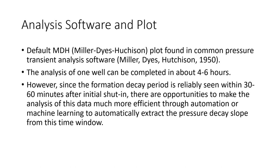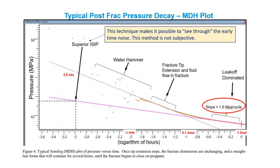This is another plot showing what you traditionally see in your MDH plot. You wouldn't want to calculate ISIP during data points where you have the water hammer immediately after shut-in. There is a fracture tip extension happening when there's a sharper decline of pressure decay. Once that smooths and it's leak-off dominated, that's when you start measuring the slope of your pressure decay. Another benefit of this post-fracture pressure decay analysis is that you can extend the line all the way to time zero. Since it's a log plot, this was extended to negative three hours, or 3.6 seconds after shut-in, to get the superior ISIP — done without any subjectivity, making it possible to see through the early time noise such as the water hammer.